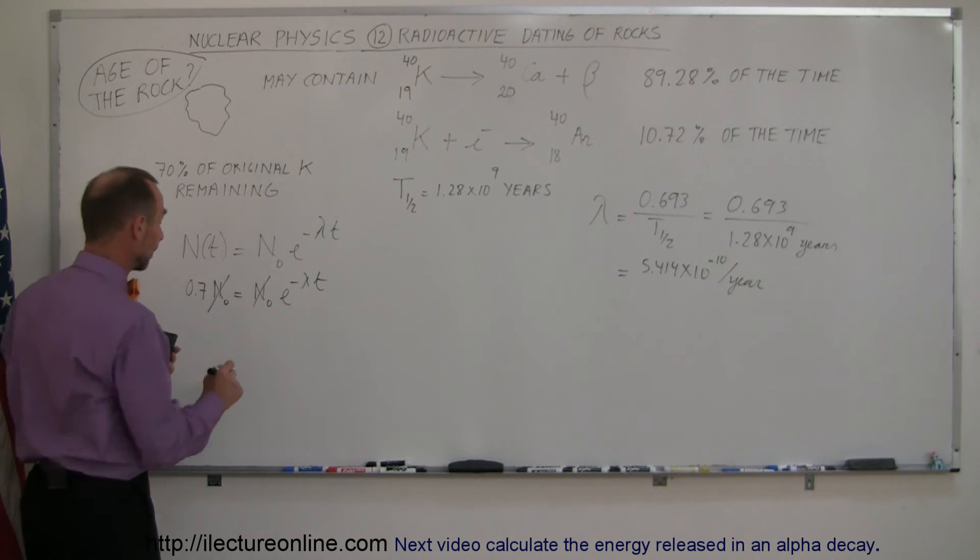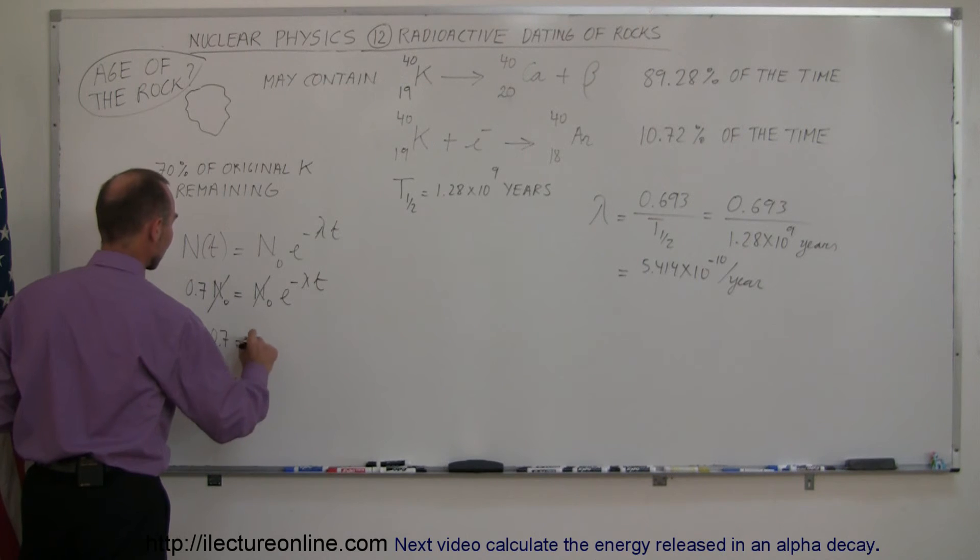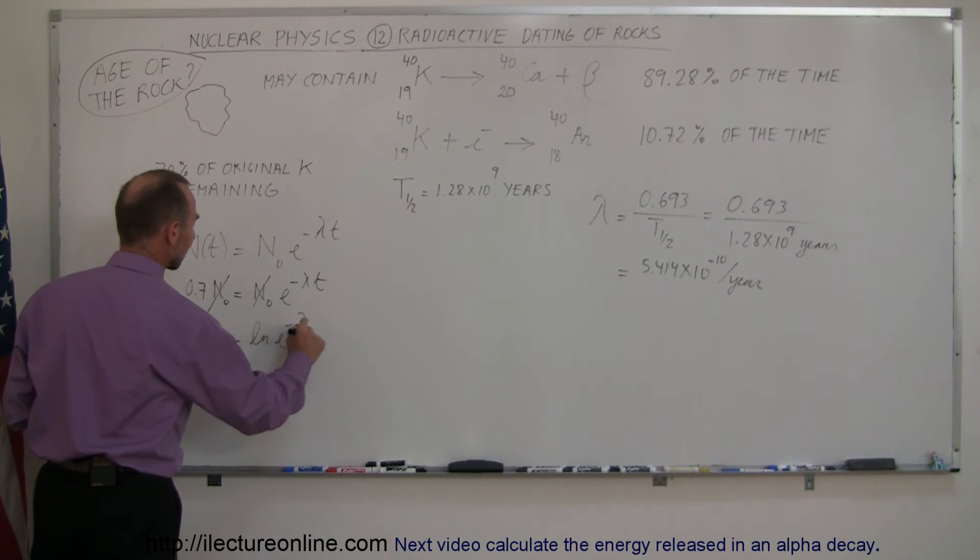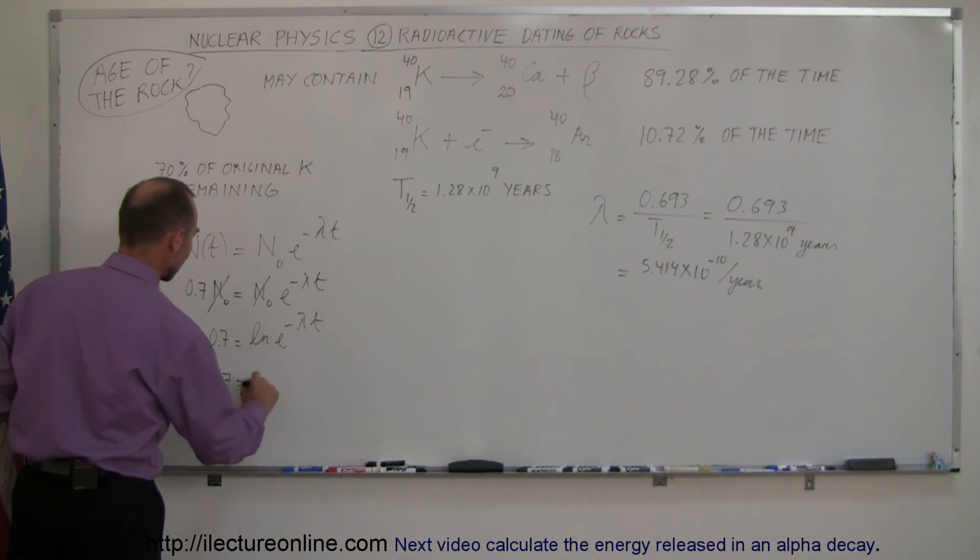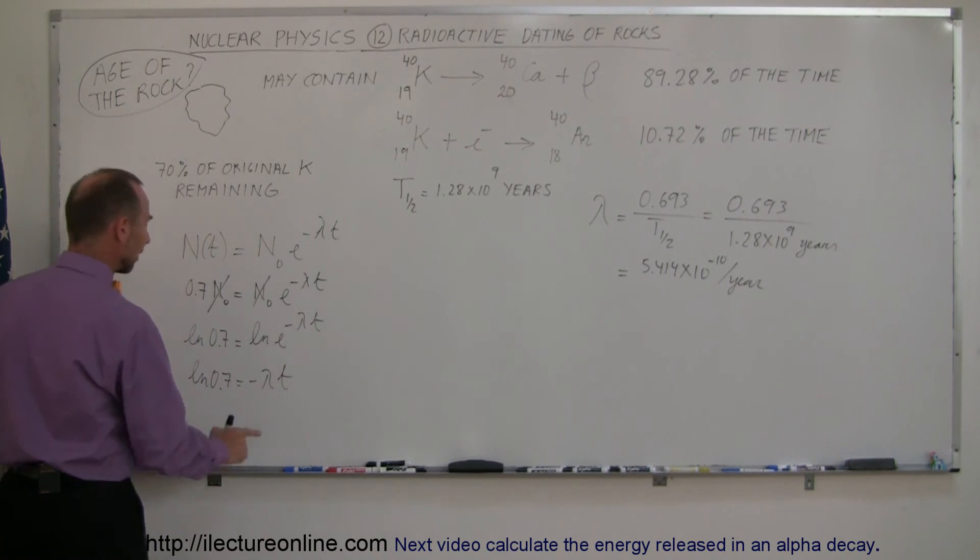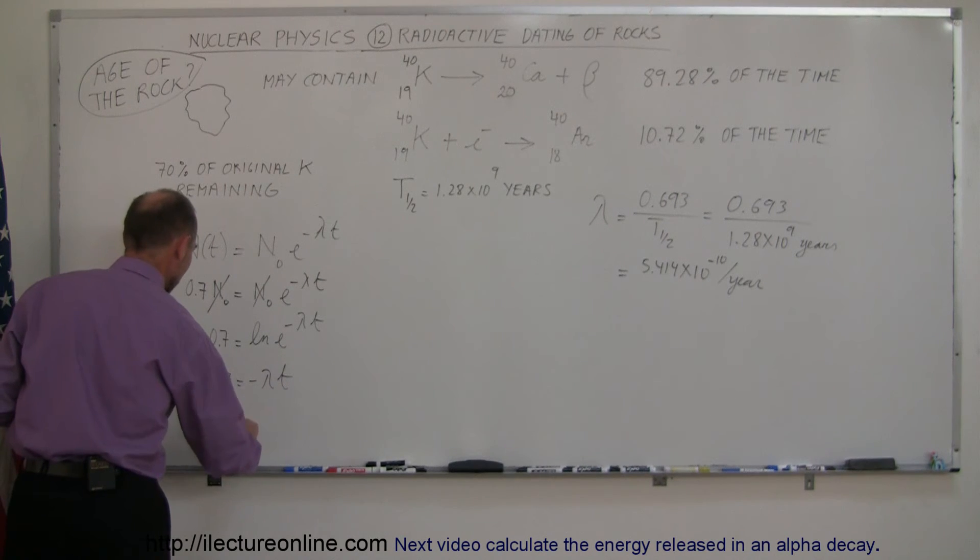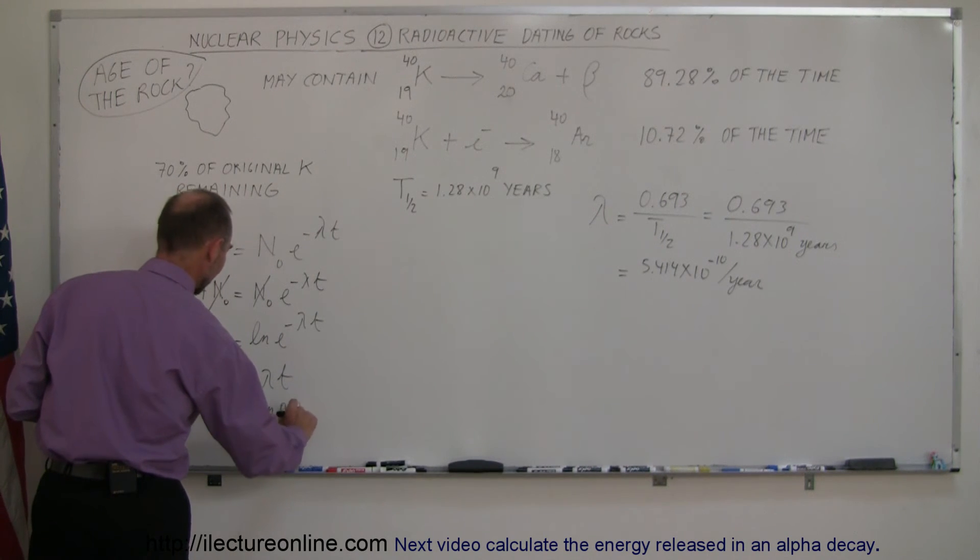take the natural log of what's left. So the natural log of 0.7 equals the natural log of e to the minus lambda times t. Of course, the natural log of 0.7 equals - this negates the e - we get minus lambda times t. And then solving that for t, we get t is equal to the natural log of 0.7 divided by minus lambda.